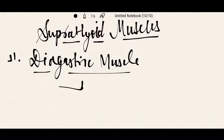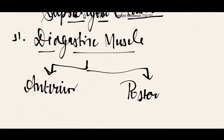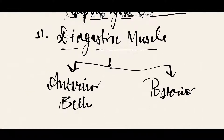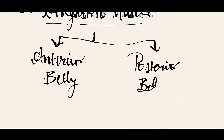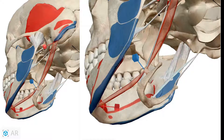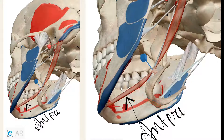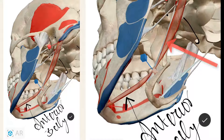The digastric muscle consists of two bellies: the anterior belly and the posterior belly. These are the two bellies of the digastric muscle — this is the anterior belly and this is the posterior belly.